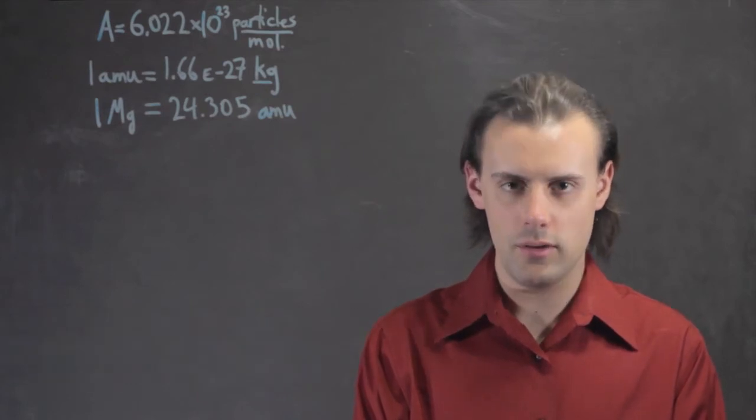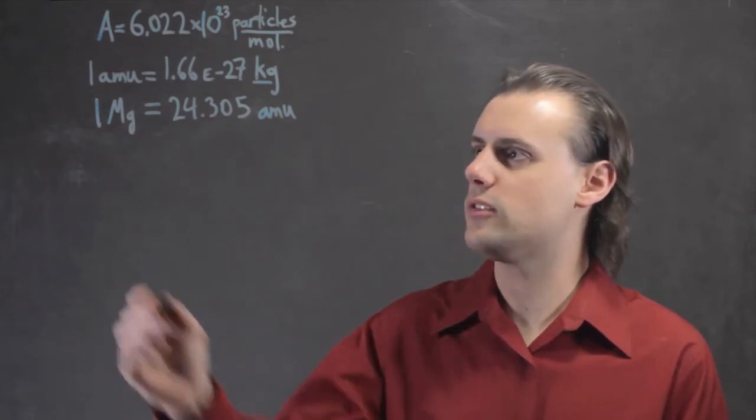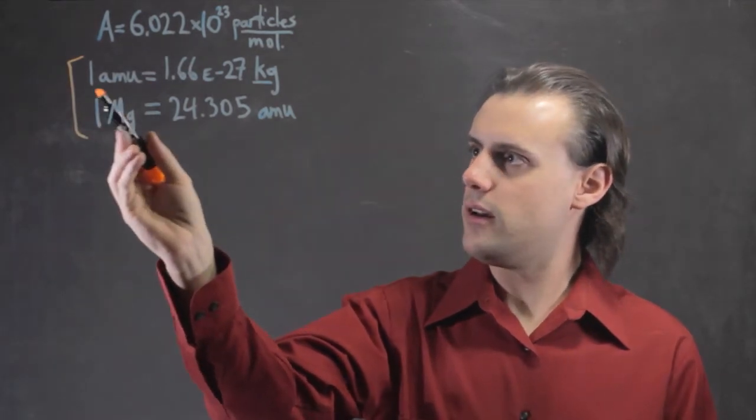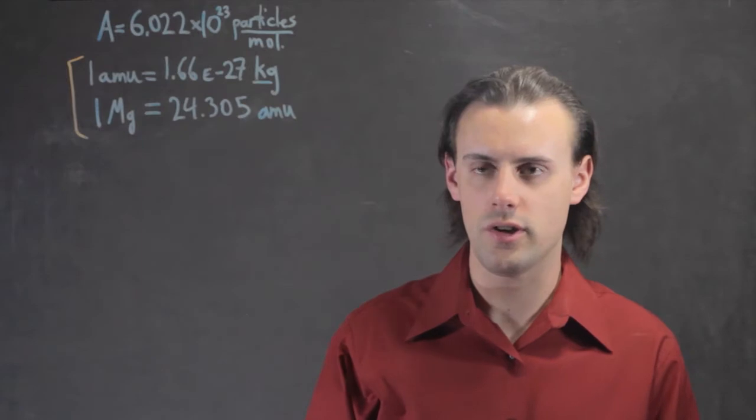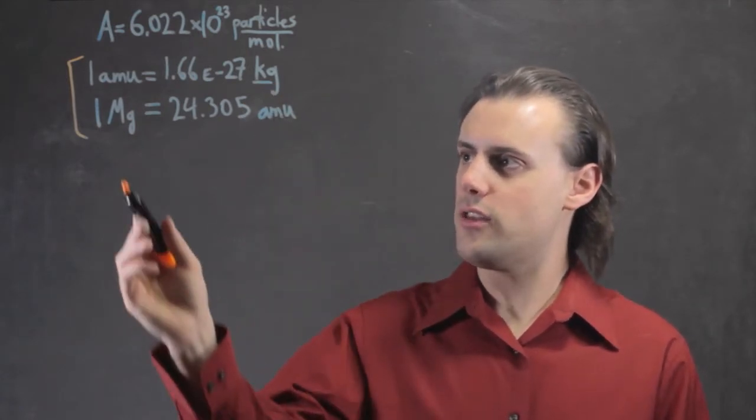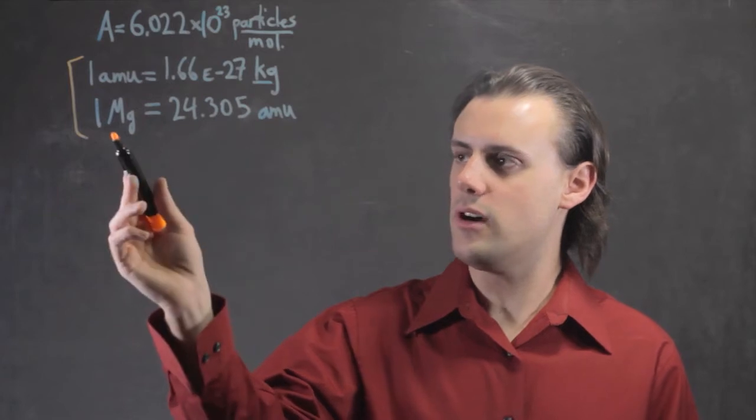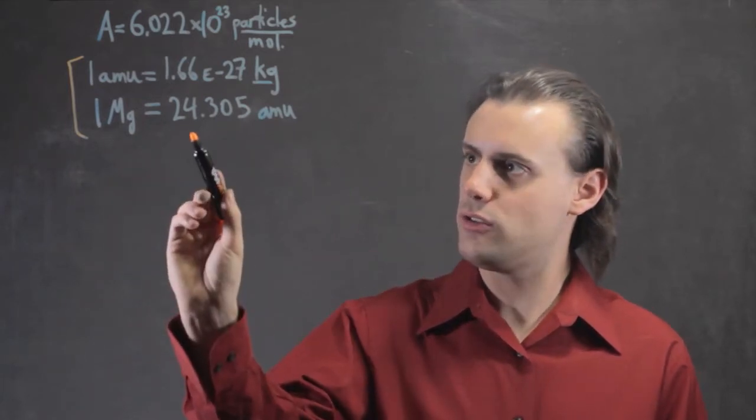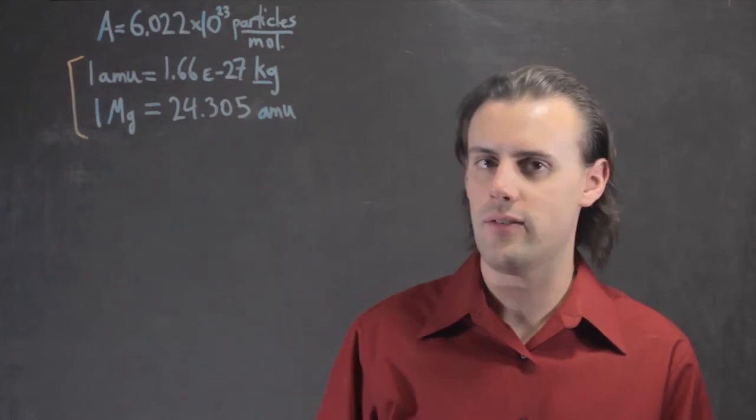So to calculate this, we need to use some fundamental constants. Here, the conversion between AMU, which is atomic mass unit, and kilograms, and the mass in AMU of one atom of magnesium. In this case, it is 24.305 AMU.